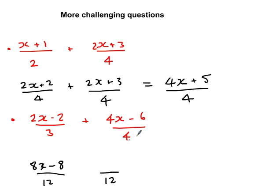Now, this time I'm going to times this second fraction by 3. So 4x times 3 is 12x minus 6 times 3 is minus 18. And I'm adding all this together. Same again. The bottom number is going to stay at 12. I've got an 8x and a 12x, which is 20x minus 8 minus 18 is minus 26. So that is my answer for this one.